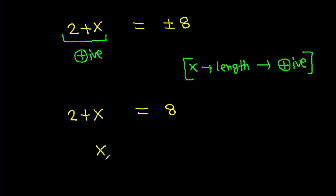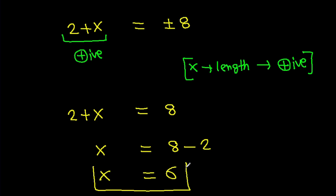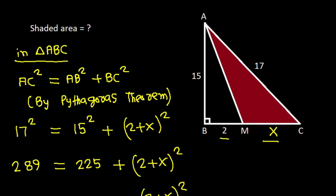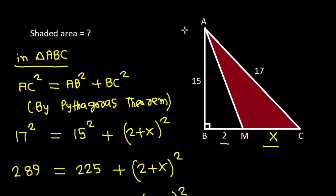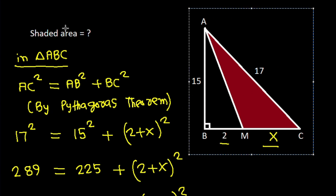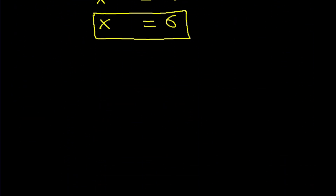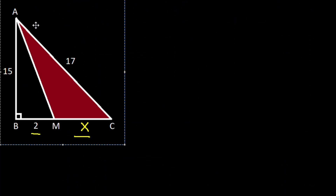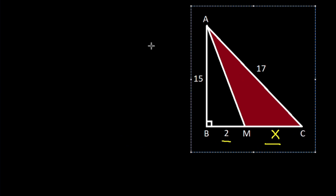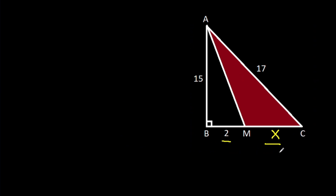Since X is a length, it should be positive. That means 2 plus X equals 8, so X equals 8 minus 2, giving us X equals 6.